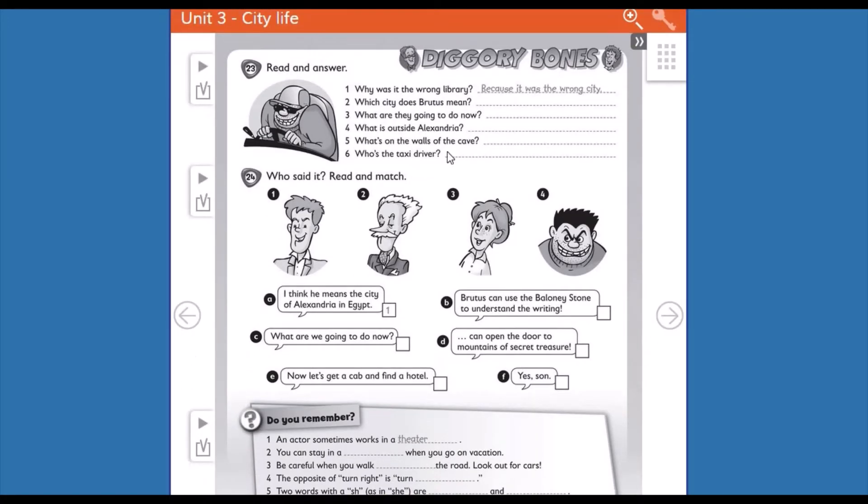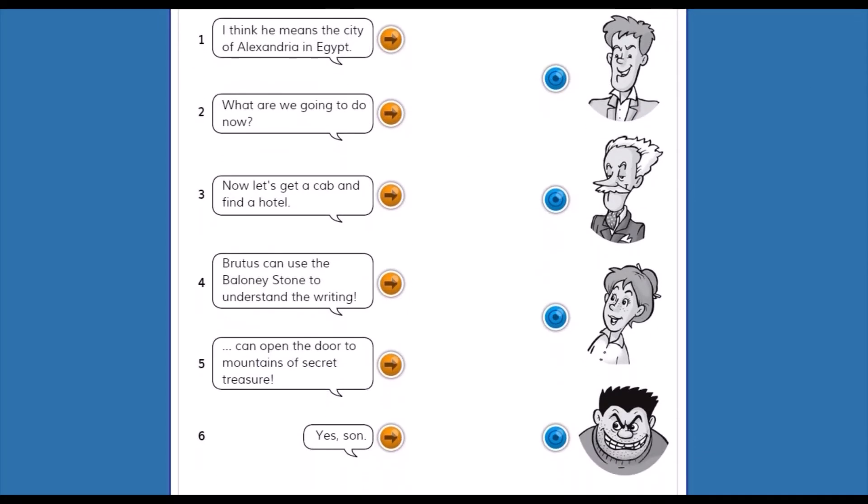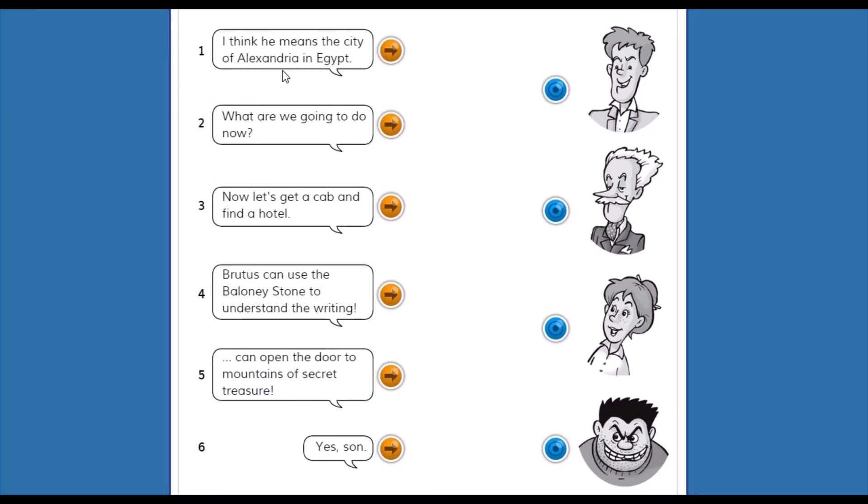Number twenty-four. Who said it? Read and match. ¿Quién lo dijo? Lee y une. ¿Qué vamos a tener que hacer? Vamos a tener que escribir one, two, three, four en cada uno de los cuadros que están acá. Vamos a unir los números con las letras. Read and match. Who said it? ¿Quién lo dijo?